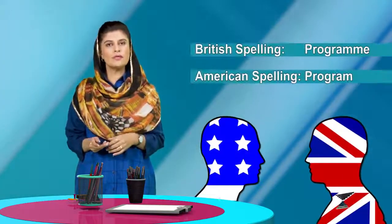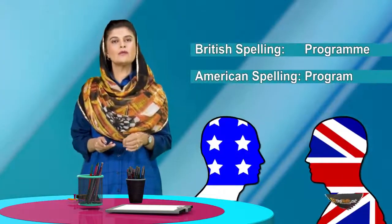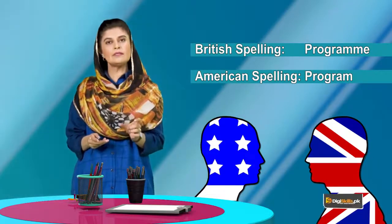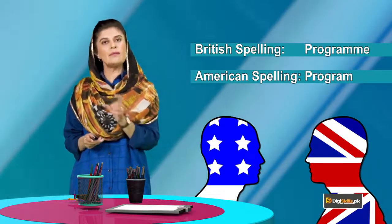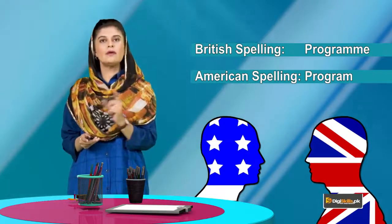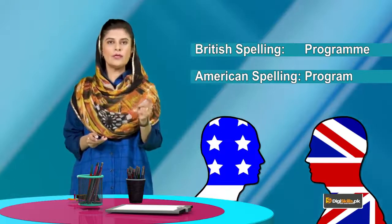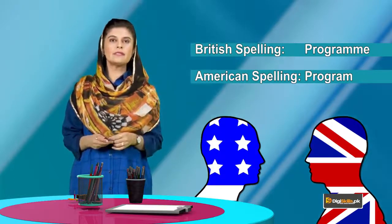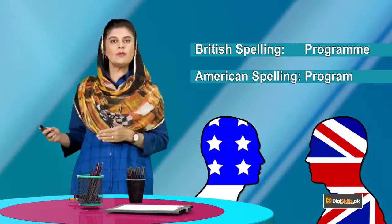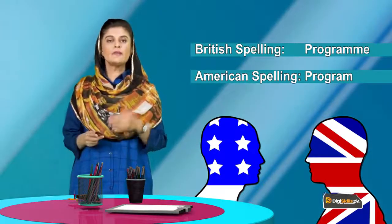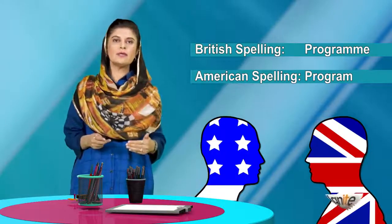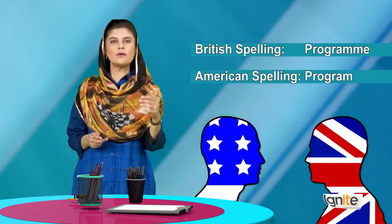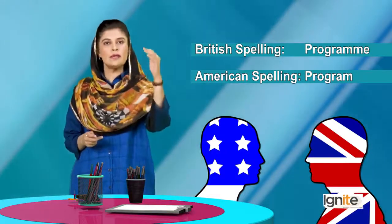For example, 'programme' — you can write it with double M, and that is British spelling. With only one M is American spelling. Whatever format you follow, make sure you are consistently following it throughout the whole document. If you follow British spellings, keep them the same; if you follow American spellings, keep them the same.